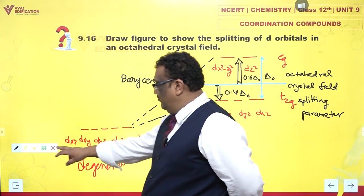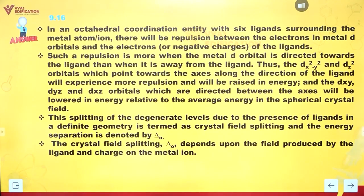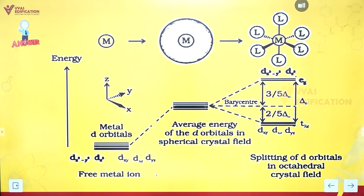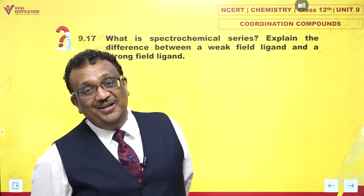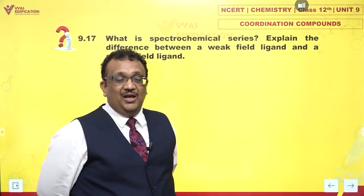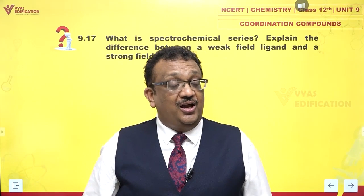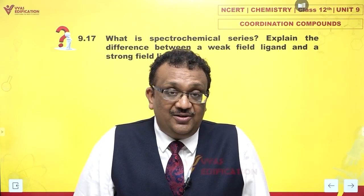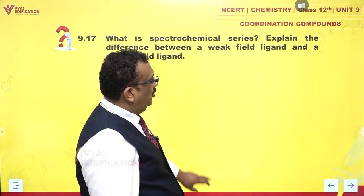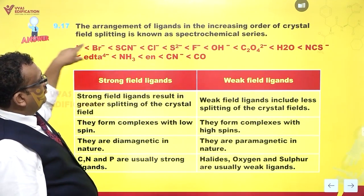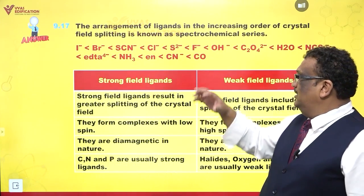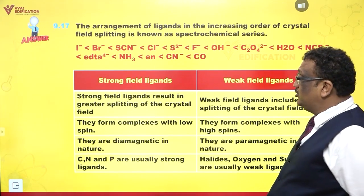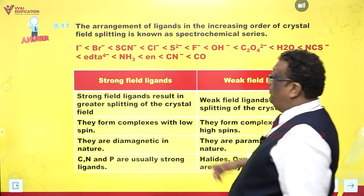There is some write-up available if you wish to take screenshots. What is the spectrochemical series? Explain the difference between a weak field and a strong field ligand. The spectrochemical series is an arrangement of ligands in the correct order of increasing field strength. I'll give you the arrangement of ligands in order of increasing crystal field splitting power.